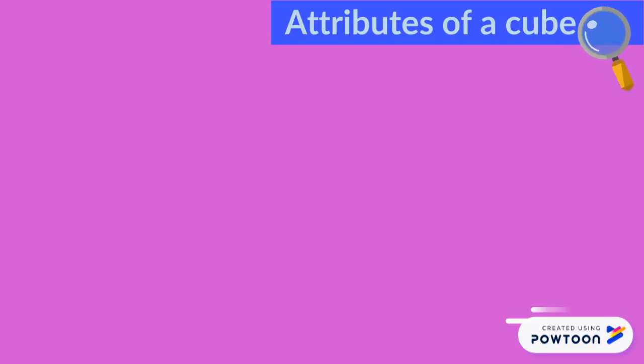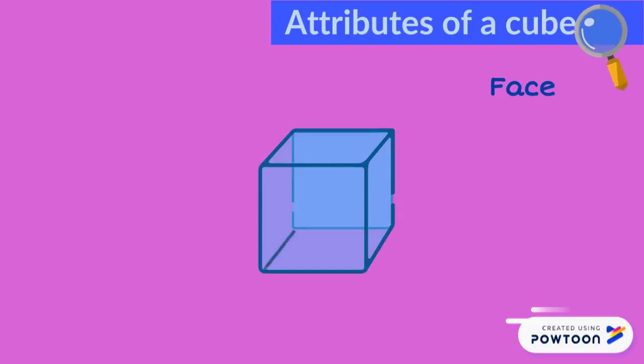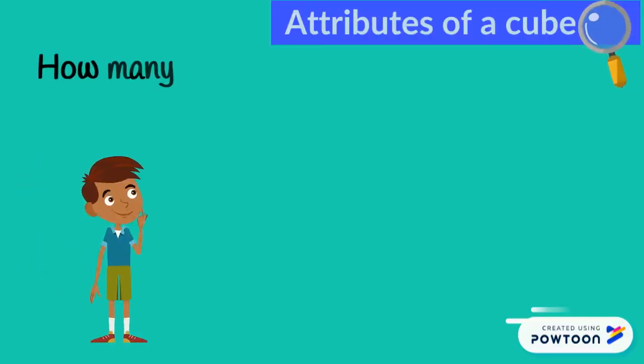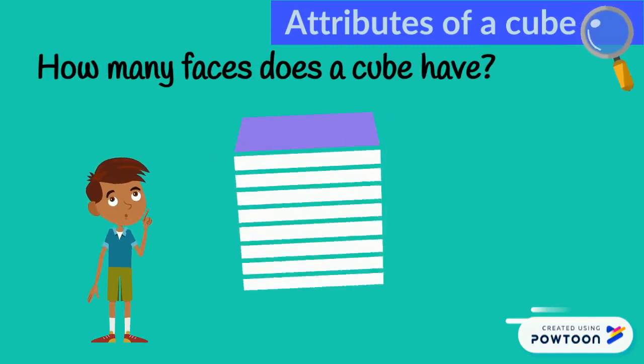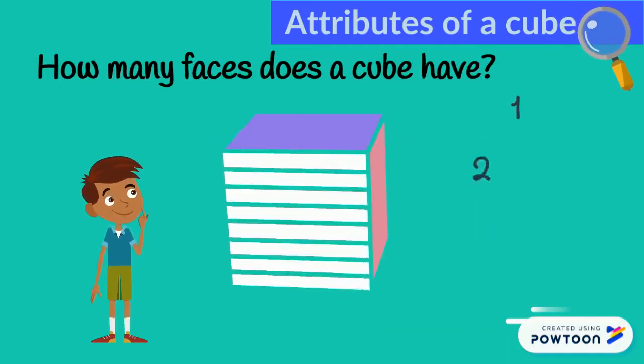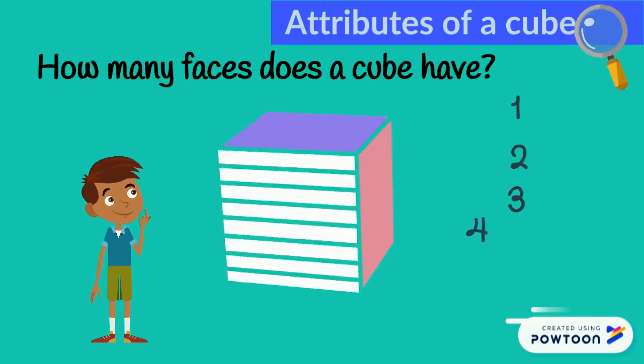The first attribute is the face. The flat surfaces of the shape are called faces. How many faces does a cube have? Ready? One, two, three, four.